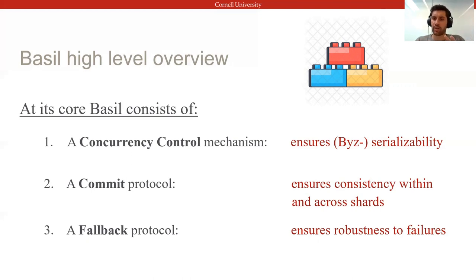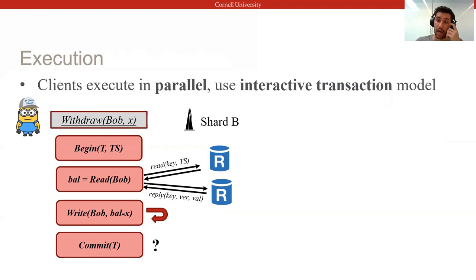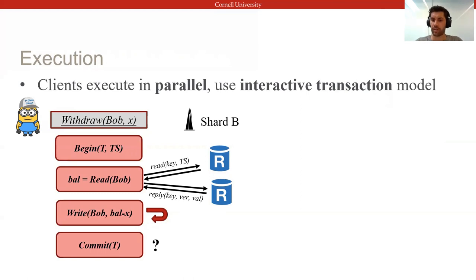In the next slides, I'll briefly go over parts of these protocols, but I encourage you to read the full paper for details. Clients use an interactive transaction model and speculatively execute their own transactions in parallel with other clients. We extend, to a replicated and Byzantine setting, a multi-version timestamp ordering (MVTO) protocol — a sophisticated but standard database concurrency control mechanism. It uses timestamps to assign transactions a serialization order a priori, and also allows optimistic reads of uncommitted data.